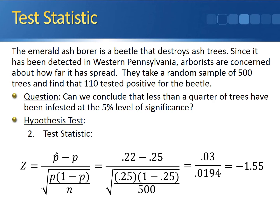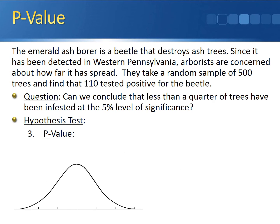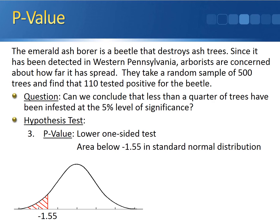This tells us that 0.22 is 1.55 standard deviations below our hypothesized proportion of 0.25. Now we calculate the p-value. Since we had a less-than sign in the alternative hypothesis, we have a lower one-sided test. As a result, the p-value is the area below negative 1.55 in the standard normal distribution. One advantage of the one-sample proportion test is that the test statistic follows a standard normal distribution, so we can get the exact p-value directly from the standard normal table. The p-value is the probability that Z is less than negative 1.55, which gives us 0.0606.